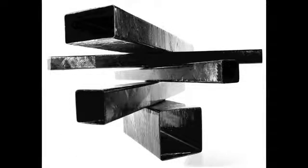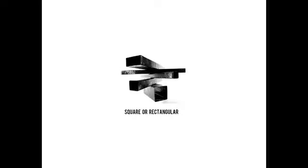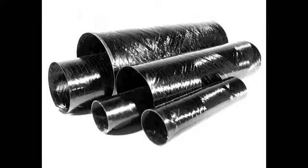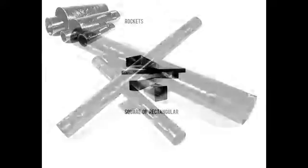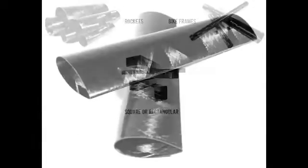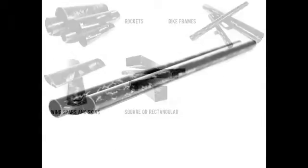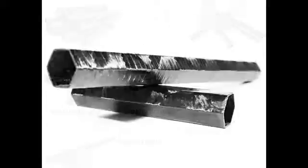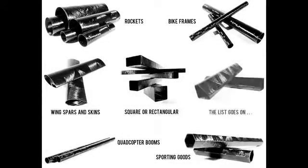And we're not just talking about making tubes. Just about anything you can wind, you can build. Like square or rectangular structural elements, rocket bodies and rocket motor casings, bicycle frame tubing, wing spars and wing skins, quadcopter booms, sporting goods equipment and the list goes on.